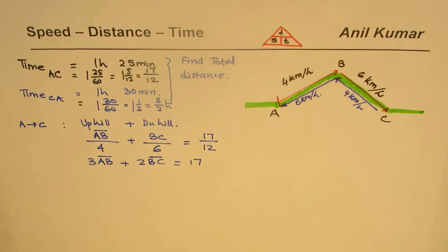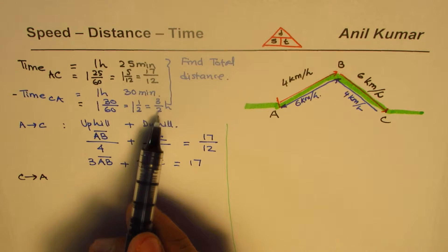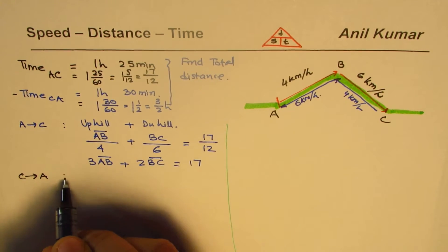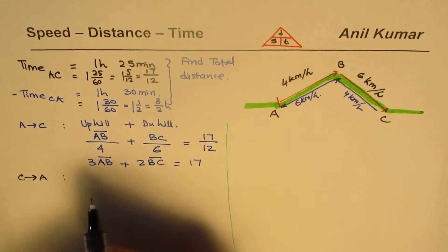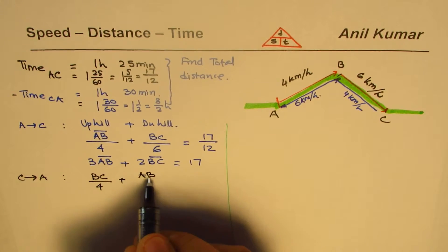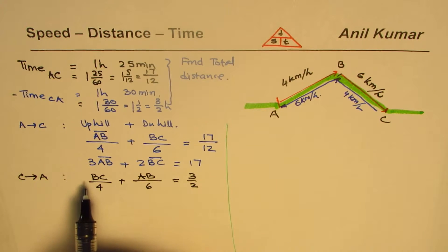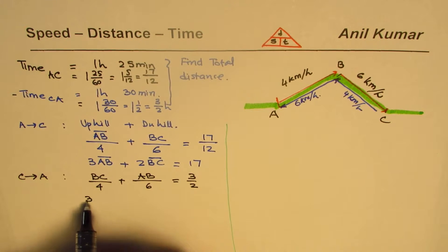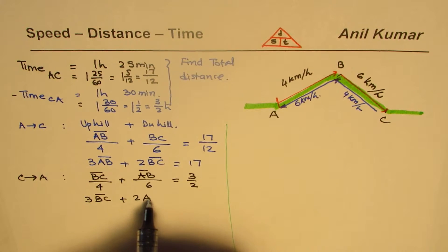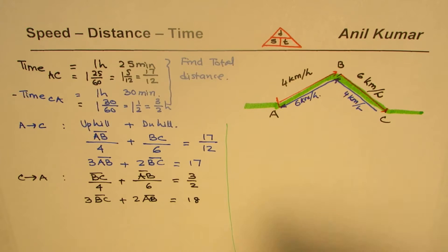Now for the return journey from C to A, the time is one and a half hours, or 3 over 2. This time BC is uphill at 4 km/h, and AB is downhill at 6 km/h. So BC over 4 plus AB over 6 equals 3 over 2. Multiplying through by 12 gives us: 3 times BC plus 2 times AB equals 18. That is our second equation.